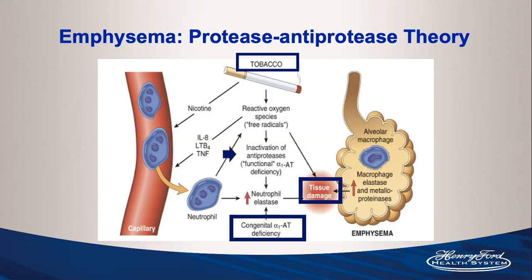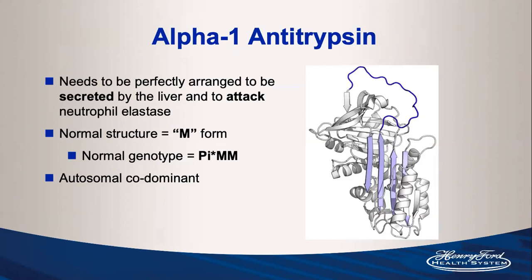You can imagine how accelerated this process is if a patient already has congenital alpha-1 antitrypsin deficiency and also smokes to create a functional deficiency on top. The normal protein structure is the M form, and the normal genotype is listed as PI*MM, meaning the patient has two normal alleles coding for the protein.